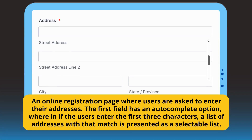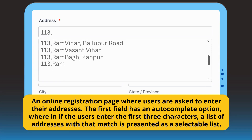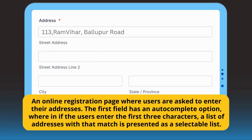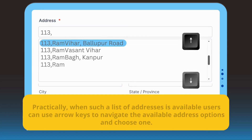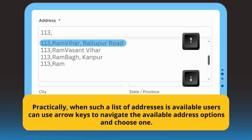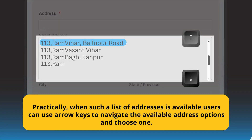Let's take an example of an online registration page where users are asked to enter their addresses. The first field has an autocomplete option wherein if the user enters the first three characters, a list of addresses with that match is presented as a selectable list.